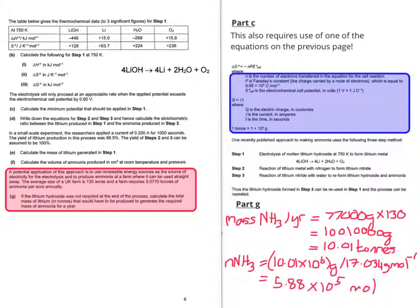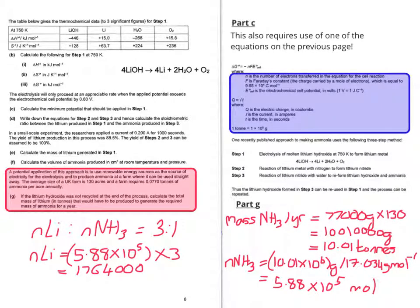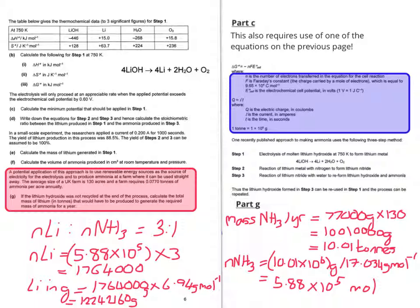Which gives us 5.88 × 10⁵ moles. Now the number of moles of ammonia to the number of moles of lithium is 3 to 1. So what we need to do to work out the number of moles of lithium is multiply the number of moles of ammonia by 3, and that gives us 1,764,000 moles of lithium. So multiplying that back up by the molar mass of lithium, that gives us 12,242,160 grams, which to three significant figures is 12.2 tonnes.